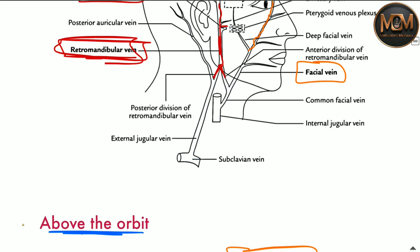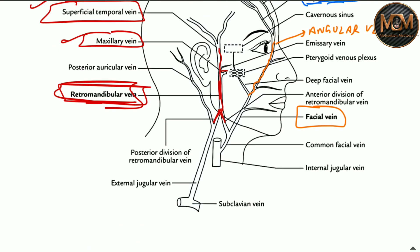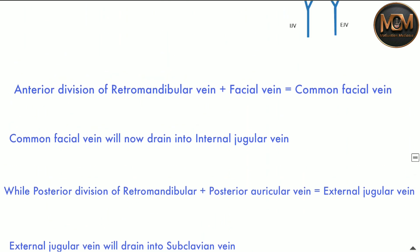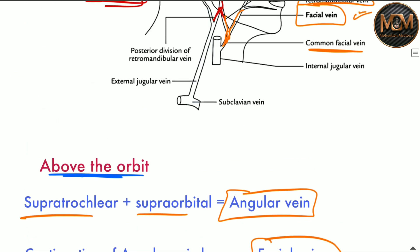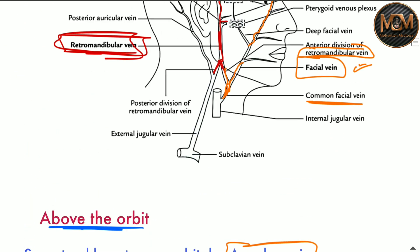Let's study the anterior division first. This anterior division of the retromandibular vein joins with the facial vein to form the common facial vein. And this common facial vein will then drain into the internal jugular vein, as you can see in the diagram.